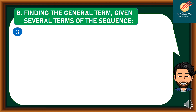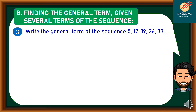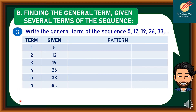The second type of generating patterns is finding the general term given several terms of the sequence. For Problem 3, write the general term of the sequence 5, 12, 19, 26, and 33. Let's list down the terms: the first term is 5, the second is 12, the third is 19, the fourth is 26, and the fifth is 33.